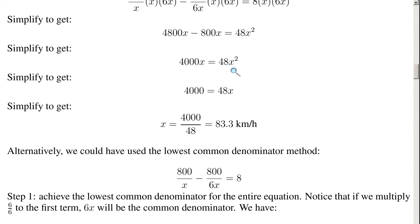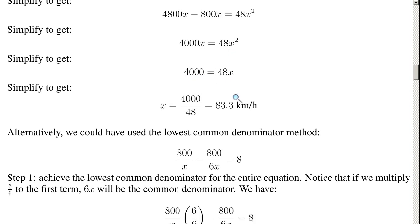Simplify further: divide both sides by x to get 4000 equals 48x. Then divide both sides by 48: 4000 divided by 48 equals x, which when you punch that into your calculator gives 83.3 kilometers per hour.